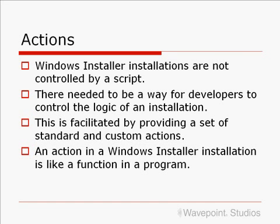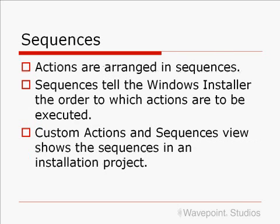An action in a Windows Installer installation is like a function in a program. Actions are arranged in sequences, and sequences tell the Windows Installer the order in which actions are to be executed.